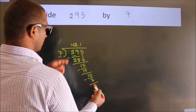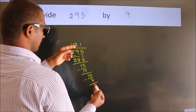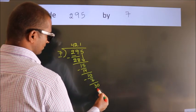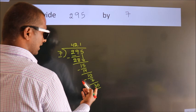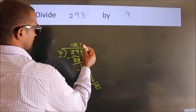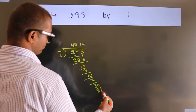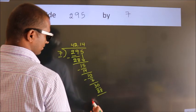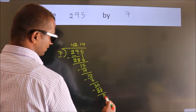After this, we already have the decimal. So directly take 0. So 30. A number close to 30 in 7 table is 7 fours, 28. Now we subtract. We get 2.